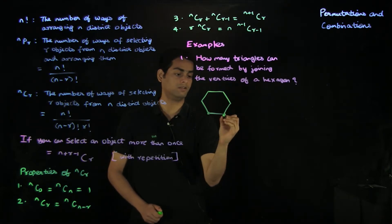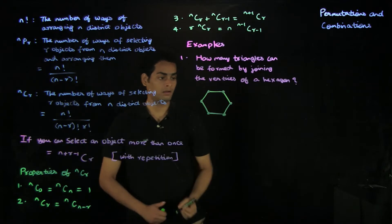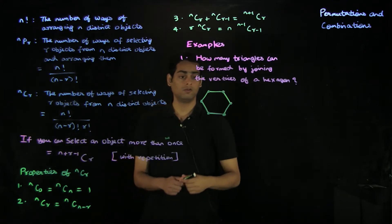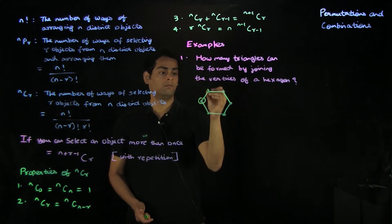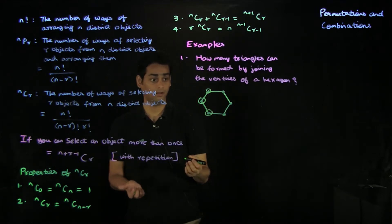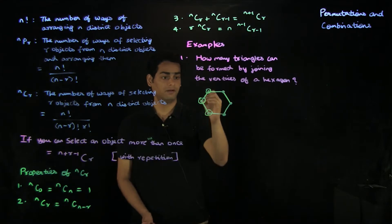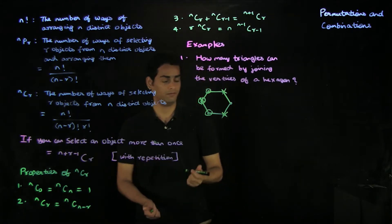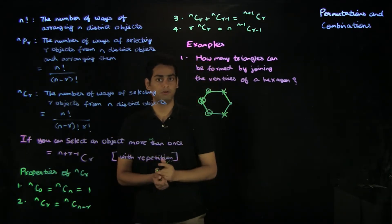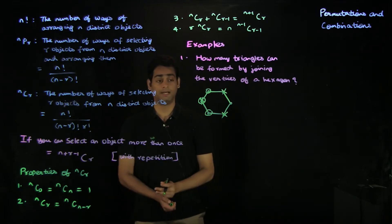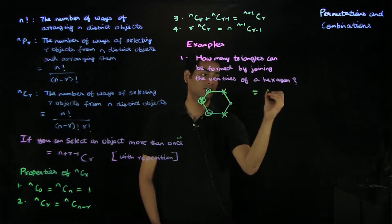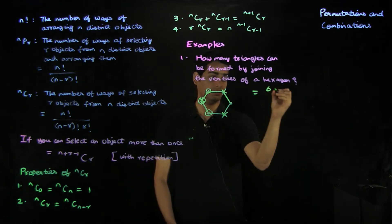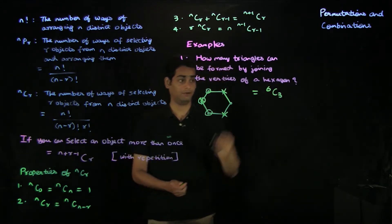The hexagon has six vertices. If we pick three adjacent vertices, can we form a triangle? Yes, because the three adjacent vertices are not collinear. If we pick three non-adjacent vertices, we can also form a triangle. So the viewer can verify that you can form a triangle by selecting any three vertices of a hexagon. Therefore, the answer is simply the number of ways of choosing three vertices from six, which is 6C3.